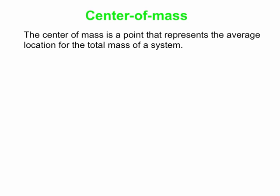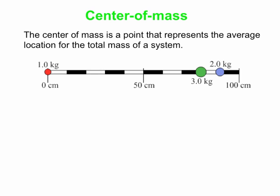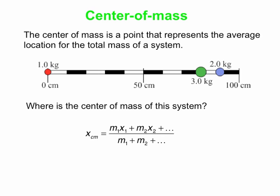What is the center of mass? It is a point that represents the average location for the total mass of a system. So, let's say you have a system like this — we have a meter stick, and we've just glued three objects of varying masses to this meter stick at the points shown. If you want to find the center of mass of that sort of system, then you can use this equation here.